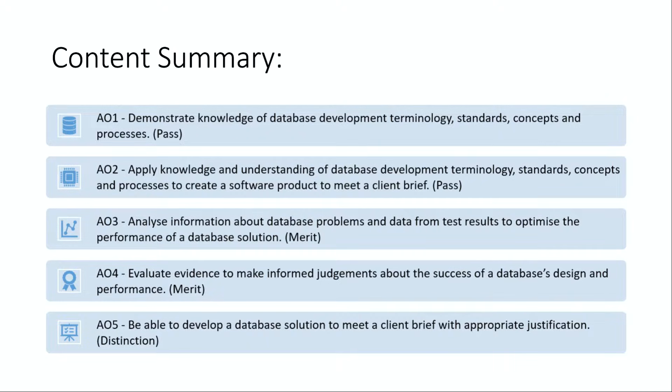Next, we have the content summary. These are all the things you need to be able to do to get a distinction, a pass, and a merit in the exams. AO1 says we need to demonstrate knowledge of database development, terminology, standards, concepts and processes. AO2: apply knowledge and understanding of database development, terminology, standards, concepts and processes to create a software product to meet a client brief. These two will be for pass.